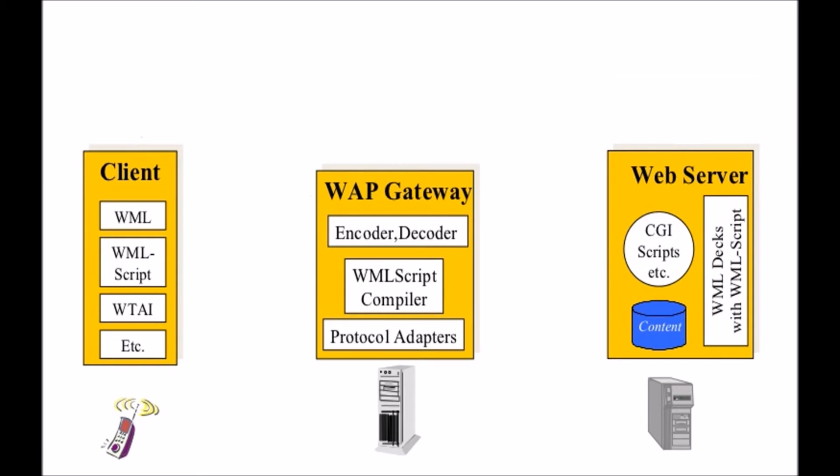Now we will discuss the working of the WAP model. Step one: open the micro browser on a WAP-enabled device and type the URL of a website. You open your mobile phone, open the browser — which is called the micro browser in mobile communication — and type a URL, for example google.com.